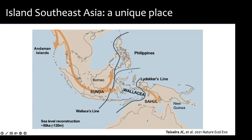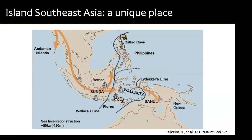Wallace's Line is one of the strongest biogeographical barriers for the dispersal of terrestrial mammals and vertebrates — it effectively separated marsupial from placental mammals. Nevertheless, from at least 700,000 years ago there's human-like presence in the islands immediately to the east of Wallace's Line. We know people migrated from Sundaland into islands including the Philippines, because there are stone tool records dating back 700,000 years ago.